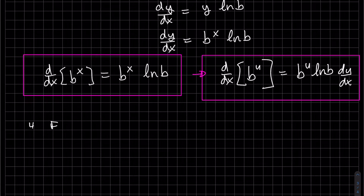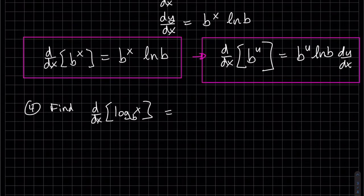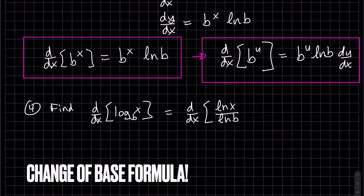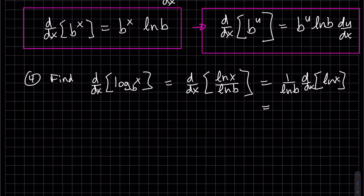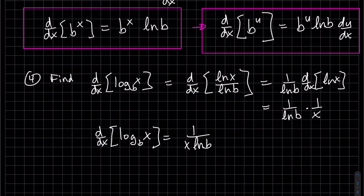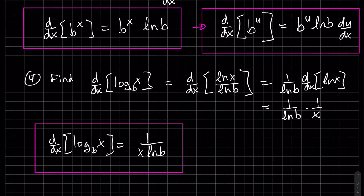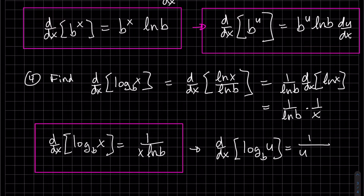Our last equation, number four. Here we can use change of base and change to natural log, because that's the one we know. Log base b of x equals natural log of x over natural log of b. Natural log of b is a constant, so it comes out front. Then the derivative of natural log of x is 1 over x. That gives us our formula. If you want to write it in terms of u, it's 1 over u times natural log of b, and then chain rule: the derivative of u in terms of x of the inside function.